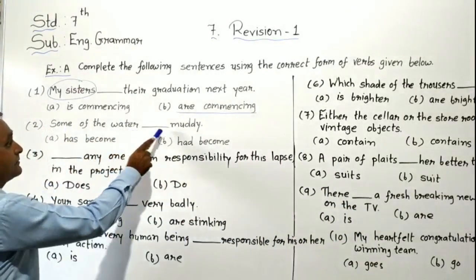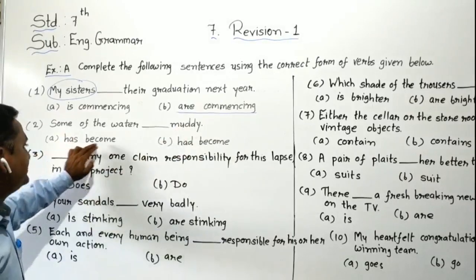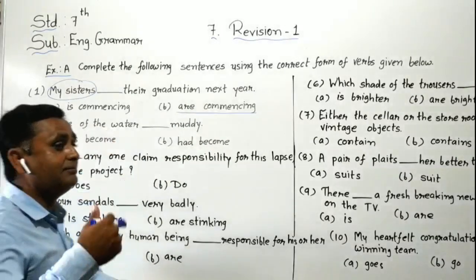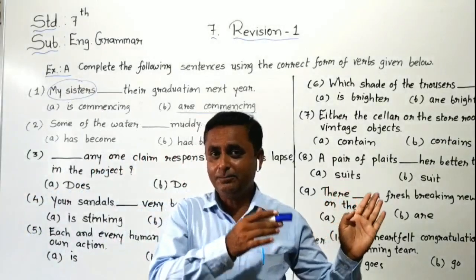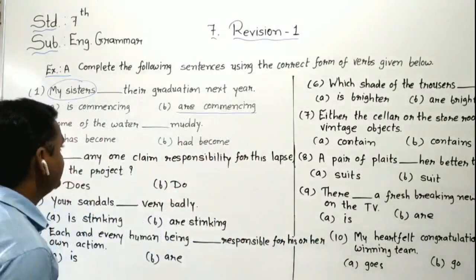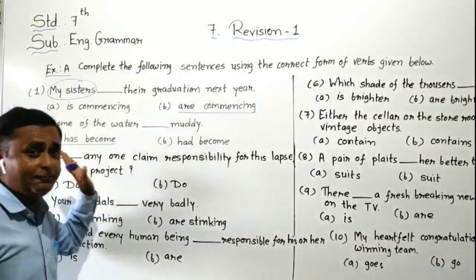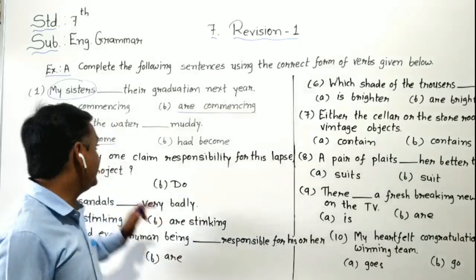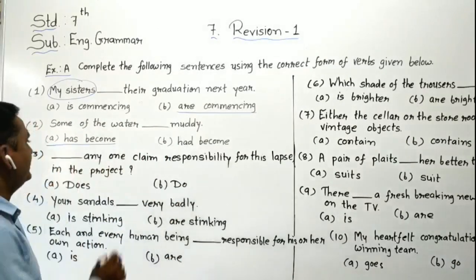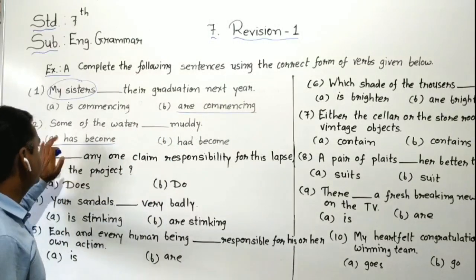Second blank: 'Some of the water, blank, muddy.' Two options are given: 'has become' and 'had become.' We are talking about something from past continuing till now — water is still muddy. So we have to use present perfect tense. The option 'has become' is for present perfect tense. The correct answer is 'has become.' Some of the water has become muddy.